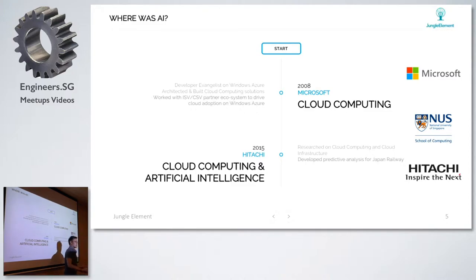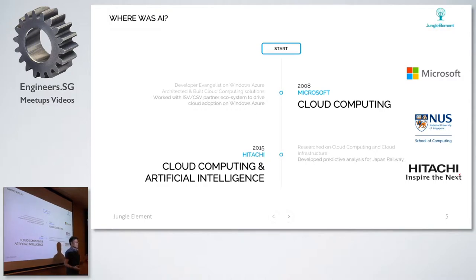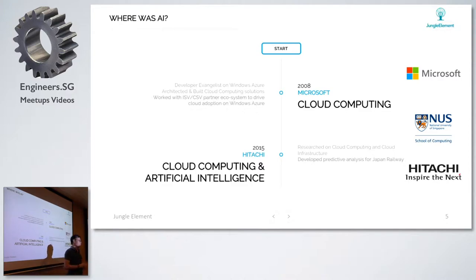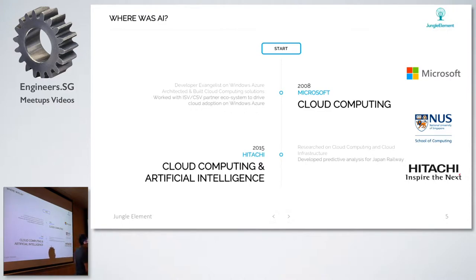I went on and did a computer science degree at NUS, then ended up doing cloud computing and AI at Hitachi, Japan. That's where I did a lot of research on building cloud computing from the ground up - platform as a service, infrastructure as a service, all the way to software as a service. AI is one of the biggest fields I'm working on now. At Hitachi, I was doing prediction analysis for train systems.